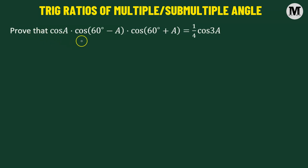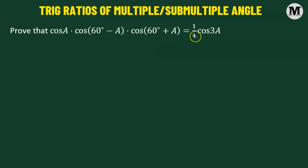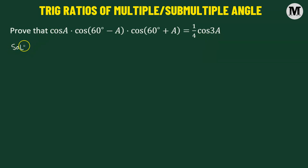We need to prove that cosine of angle A times cosine of (60° minus A) times cosine of (60° plus A) is given by one quarter of cosine of angle 3A. That's a very important proof — we'll start from the left hand side.